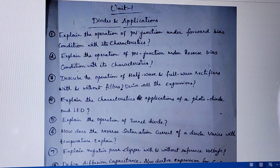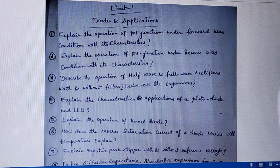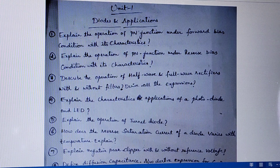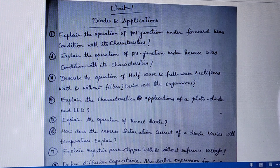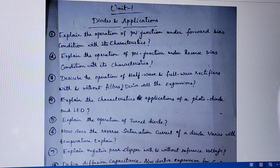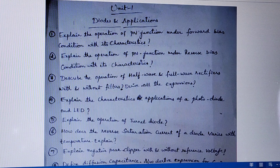Fourth question is explain the characteristics and applications of a photodiode and LED. Fifth question is explain the operation of tunnel diode. Sixth question is explain how does the reverse saturation current of a diode varies with temperature. Next question is explain negative P-clipper with and without reference voltage.